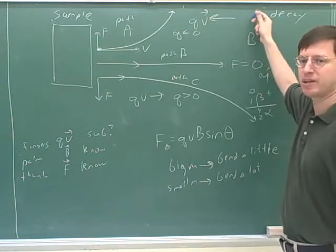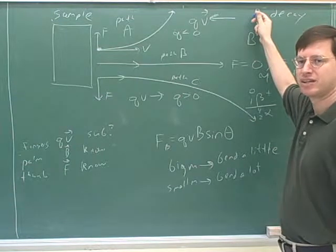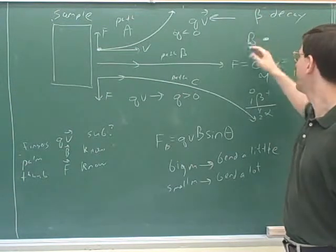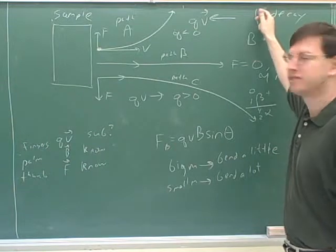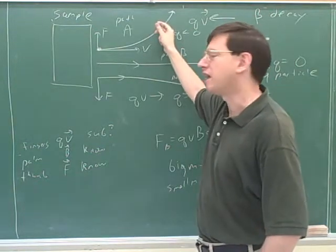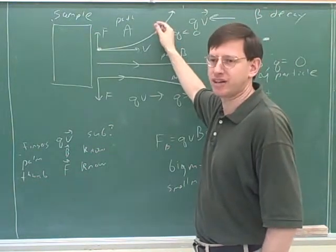It represents beta decay, right? Is that a big mass or a small mass? It's a small mass. Remember that beta decay, the mass is approximately zero. So that's the reason I drew this like this. A beta particle would get a whole lot of bending here.